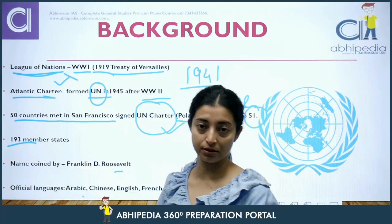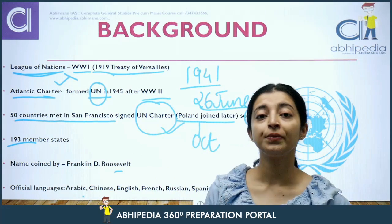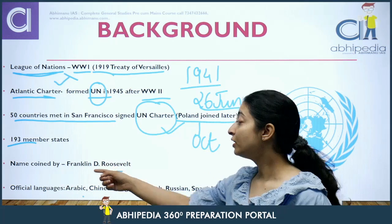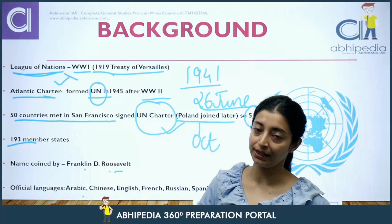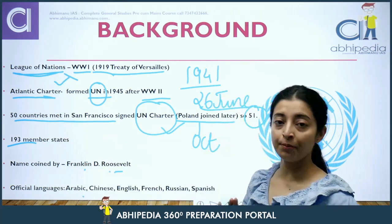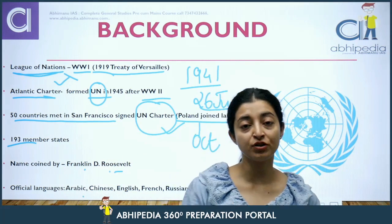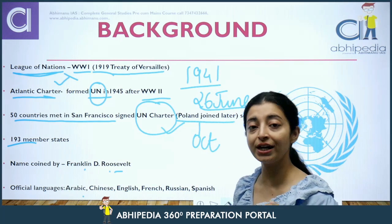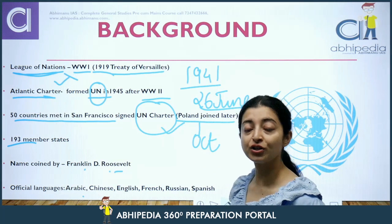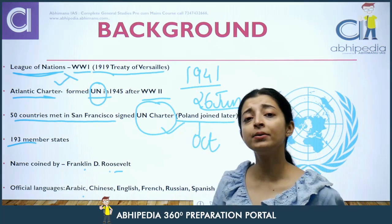Currently there are 193 members of the United Nations. The UN has 6 official languages: Arabic, Chinese, French, English, Russian, and Spanish. Now let's go into details and talk about the components.